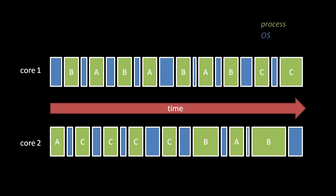What's happening here is that a portion of the OS, called the scheduler, runs after each process to decide what OS work, if any, should be done, and which process should run next.